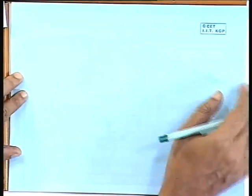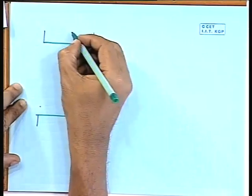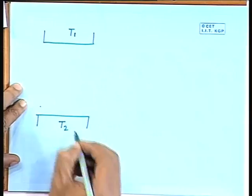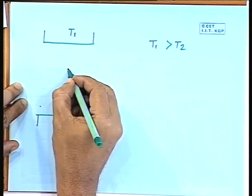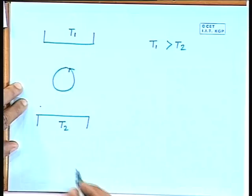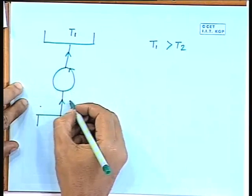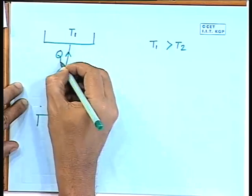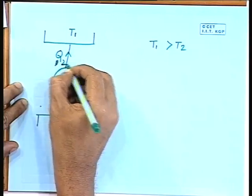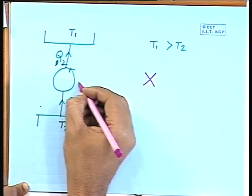Just like the previous case, let us make a sketch. We have two bodies at different temperatures: temperature T1 and temperature T2, with T1 greater than T2. We have some device operating in a cycle. It is transferring heat Q2 from the low temperature body to the high temperature body. But second law says that this on its own is impossible.